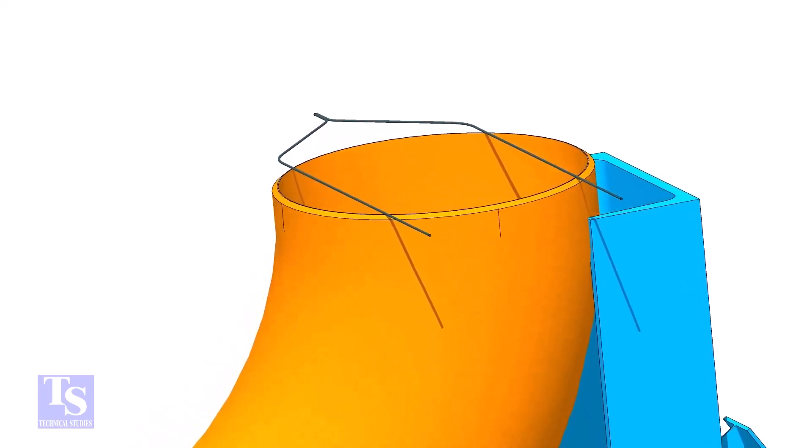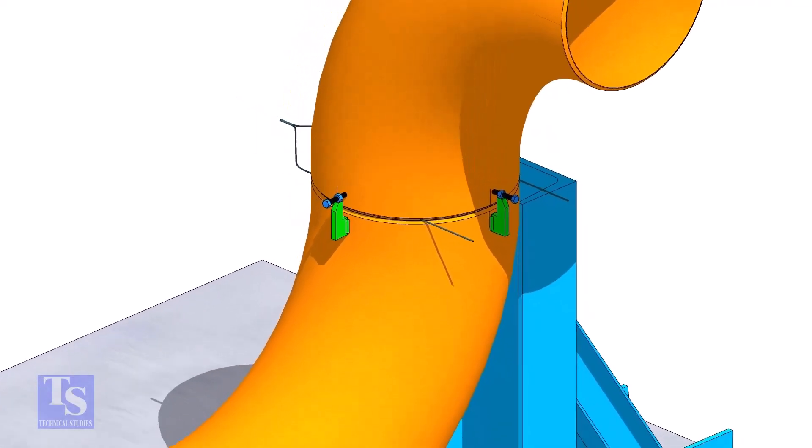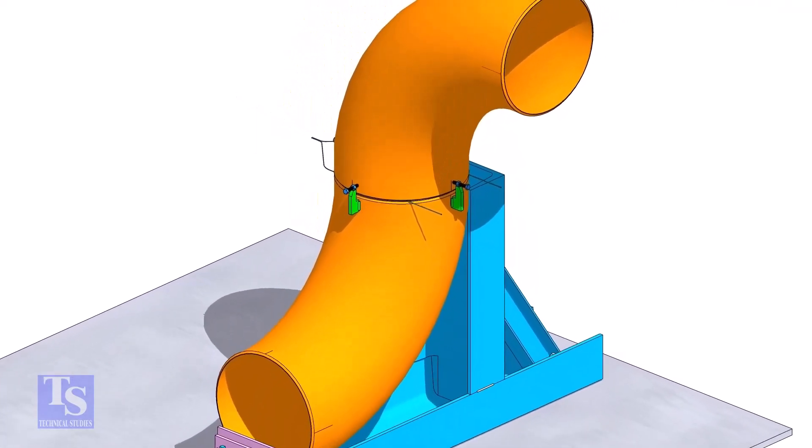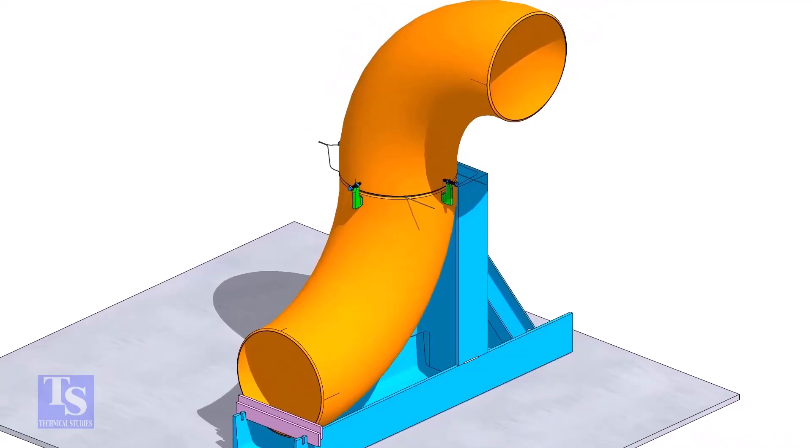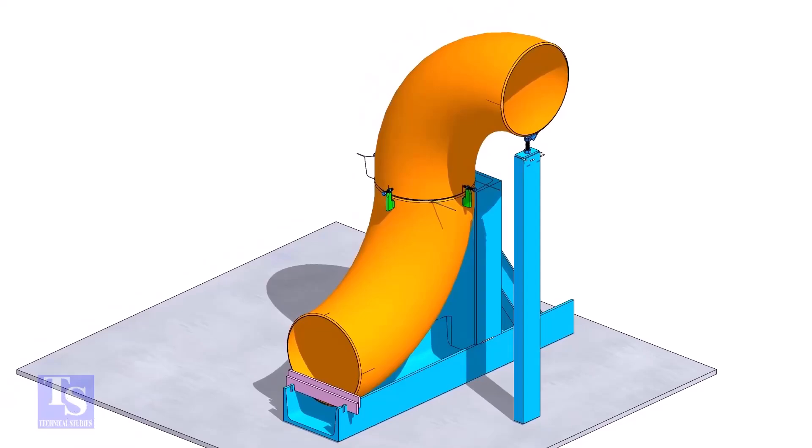Put the gap rod on the top face and tack weld four numbers jack bolts as shown. Put the other elbow and match the center lines in which direction you want to rotate the elbow. Tack weld an adjustable support below this elbow and adjust the height.